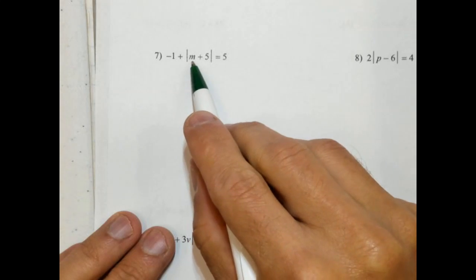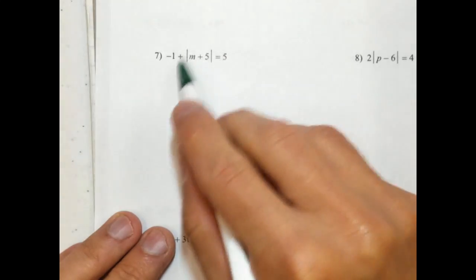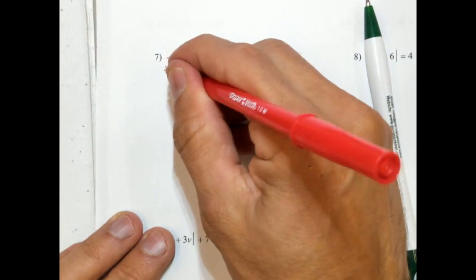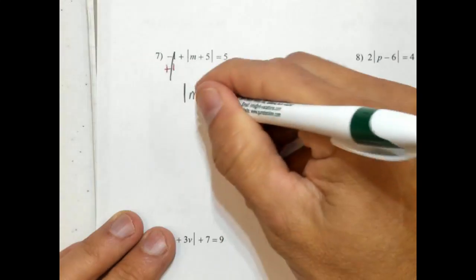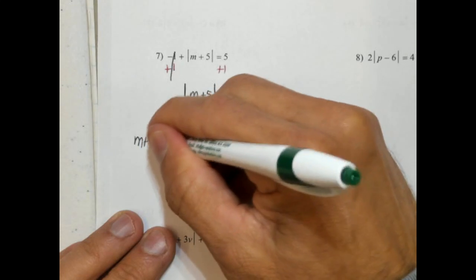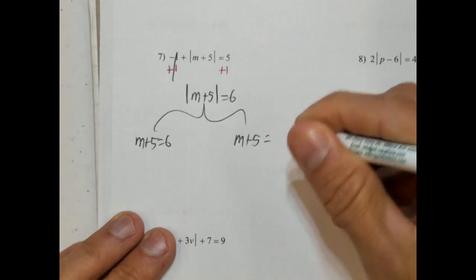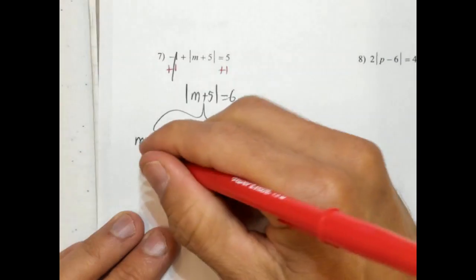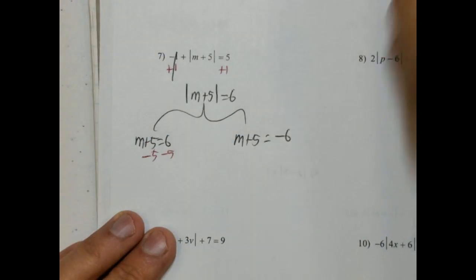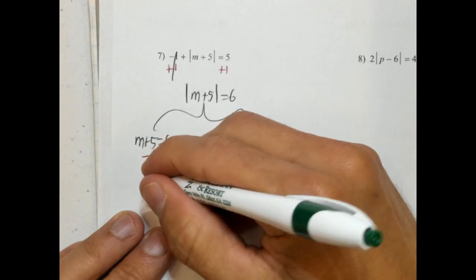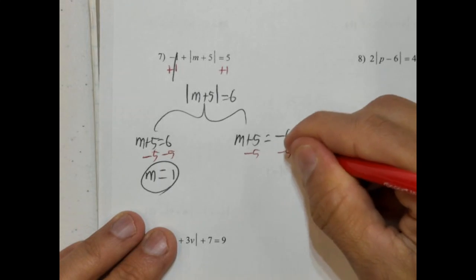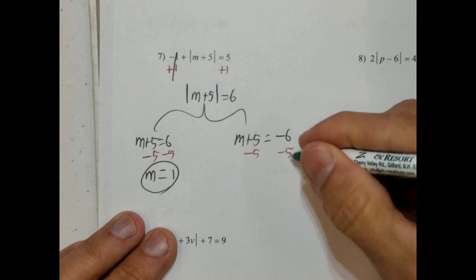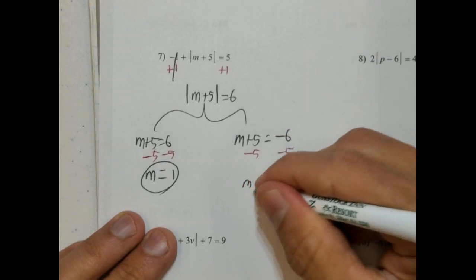We have negative 1 plus the absolute value of m plus 5 equals 5. We want to get the absolute value by itself, so we get rid of the negative 1 on the outside. That gives us absolute value of m plus 5 equals 6. Splitting and rewriting: m plus 5 equals 6, and m plus 5 equals negative 6. Subtracting 5 from both sides, m equals 1, and negative 6 minus 5 gives us negative 11. Those are our two answers.